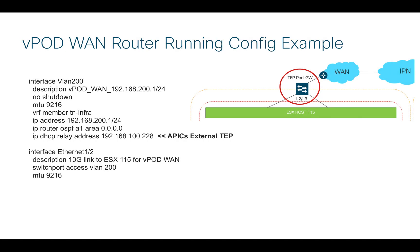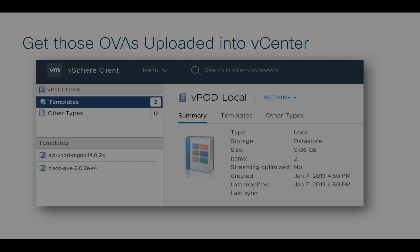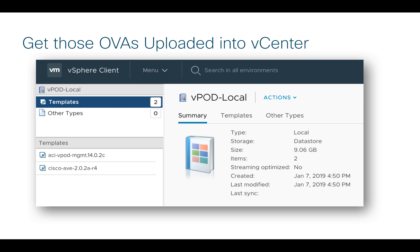Here's what the WAN router in the VPOD site actually looks like — it's generic routing, nothing special. I've allocated subnet 192.168.200.0 for this, set up DHCP relay, configured basic OSPF routing, and allocated VLAN 200 — any VLAN works, I chose 200. I'm also using a larger MTU of 9216. I've downloaded the OVAs from Cisco.com and uploaded them into the vCenter content library where I'll be deploying all the VPOD components.